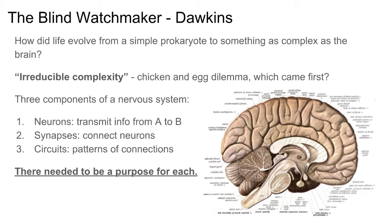What we see with the brain is kind of a trifecta of things. You're going to need neurons to transmit information between points A and B. You're going to need synapses to connect these neurons. And you're going to need circuits to create these patterns to get some kind of use from all of your neurons connected with synapses. There needs to be a purpose for each one of these three criteria in order for the other two to sustain each other.